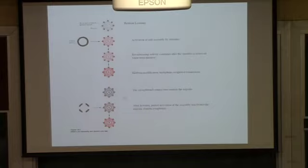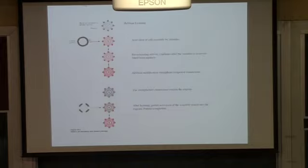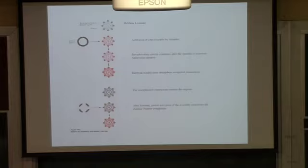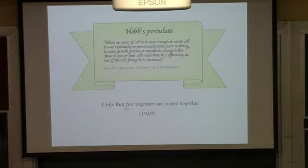Such that next time, if you present not the full stimulus but a partial view of it, you activate the system in the same way as you would with the full stimulus. That is called pattern completion — you see a piece of a letter A and you reconstruct the A. The idea is that you need some kind of rule to make those connections stronger. This is the Hebb postulate, written in 1949.